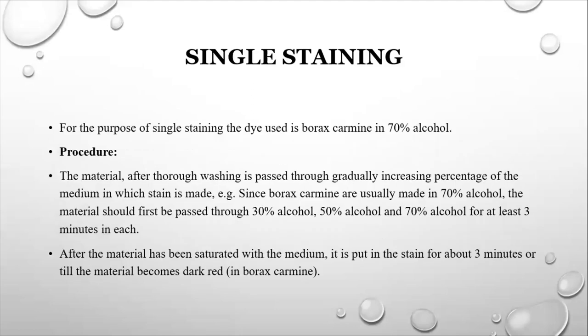Now we are going to do the single staining. So what is the process? Here we are using the dye or the stain borax carmine made in 70% of alcohol. So first, we are going to pass the sample to 30% of alcohol, 50% of alcohol, and then 70% of alcohol for 3 minutes each. After the material has been saturated with the medium, it is put in the stain for about 3 minutes or till the material becomes dark red in borax carmine.